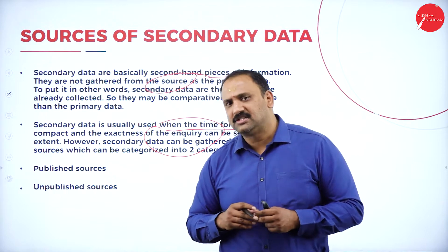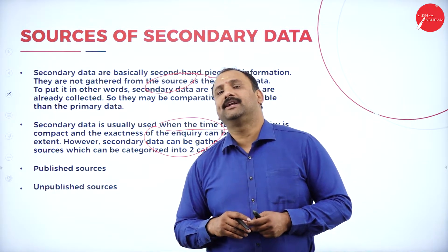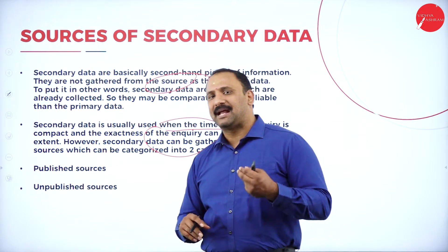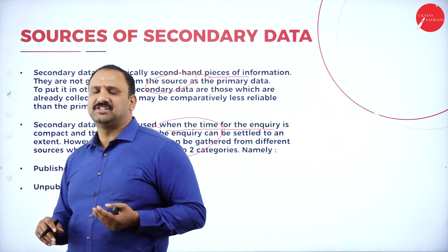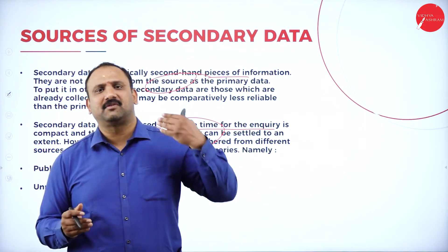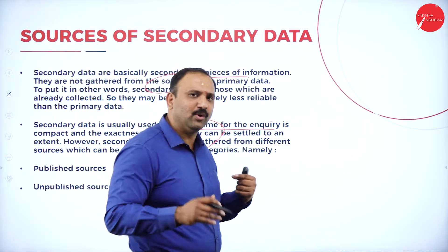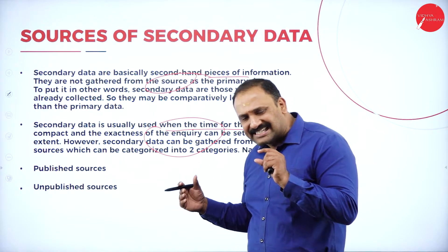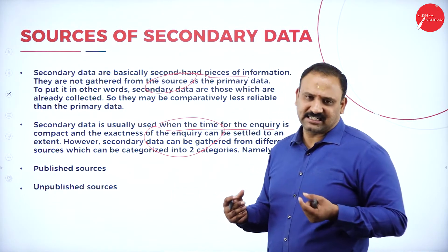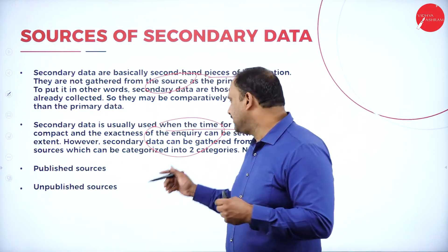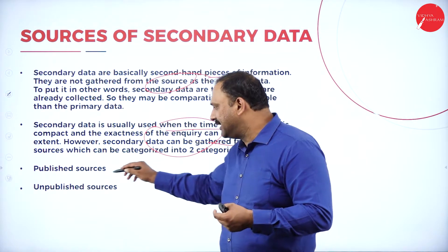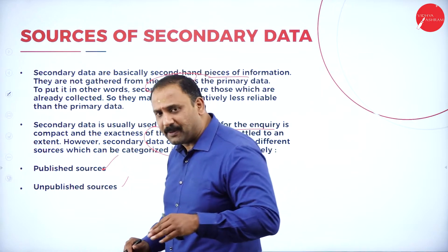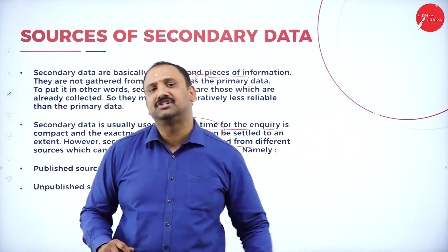As a researcher, you might not be satisfied with secondary data because you have not done any primary research. You've just gone through the systems, rushed through the available data, and taken it forward. Secondary data will not have exactness — it is not accurate to the last level. However, secondary data can be gathered from different sources, namely published and unpublished sources.